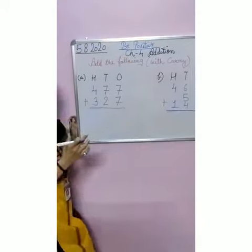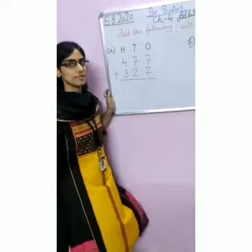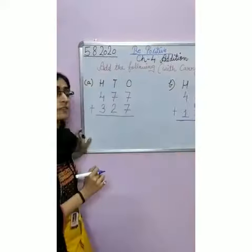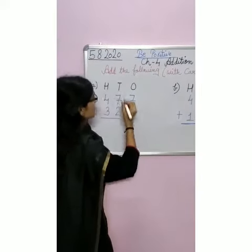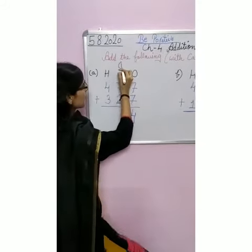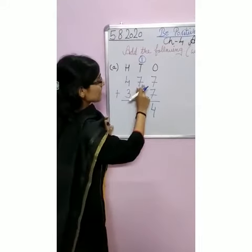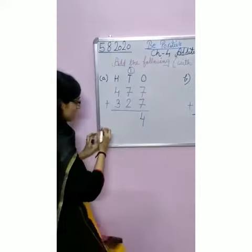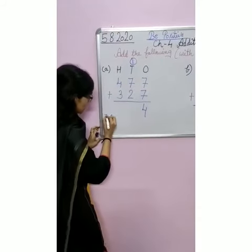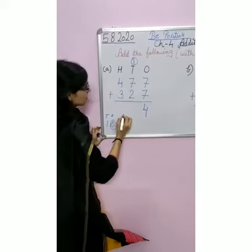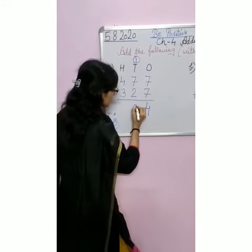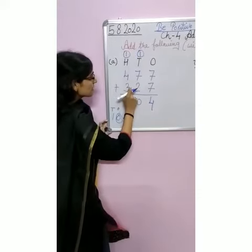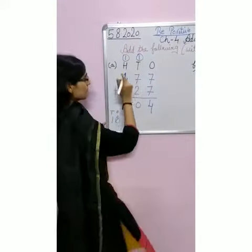We have to do it in the same manner. First we have to add the 1s, 10s, and 100s. So let's begin. 7 plus 7 equals 14. 1 will go as carry for 10s. 7 plus 2 equals 9. 9 plus 1 equals 10. 10 means we divide: 0 will come here and 1 will go as carry. 4 plus 3 equals 7, and with 1, that's 8... and 1, making 10.